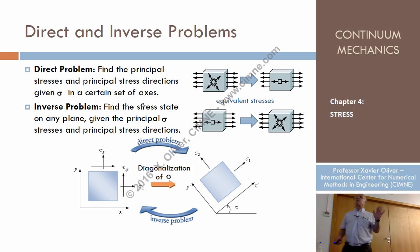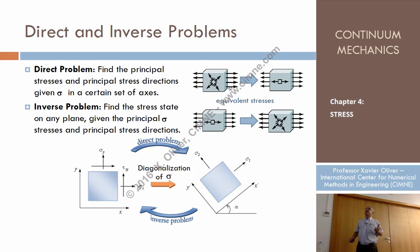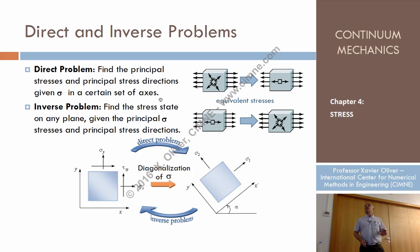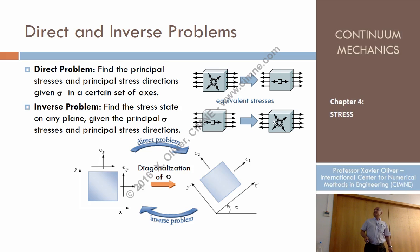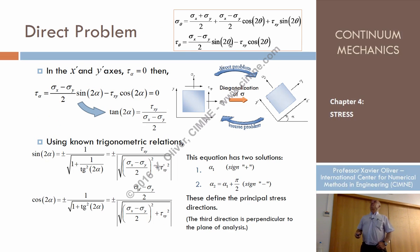We can state traditionally two problems about the stress state: finding the normal and tangential stresses in certain planes, finding where the principal directions and principal stresses are — essentially diagonalizing the tensor — or the inverse problem, which is the opposite: if we know the principal stresses and principal directions, then find what are the stresses in any system of coordinates XY. That's what is called the direct and the inverse problem.